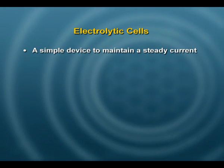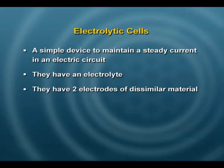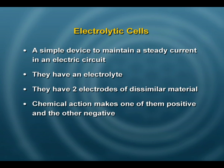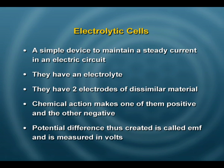Today we are going to talk about internal resistance of a cell. An electrolytic cell, as you already know, is one in which you have an electrolyte and electrodes, and the chemical reaction produces a potential difference between them. This potential difference is called the EMF of that cell.